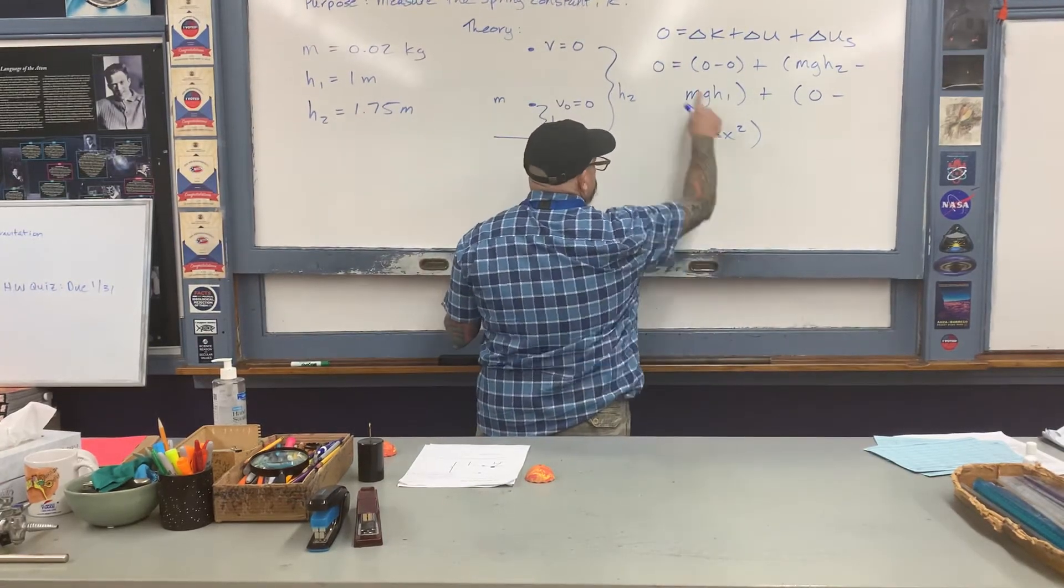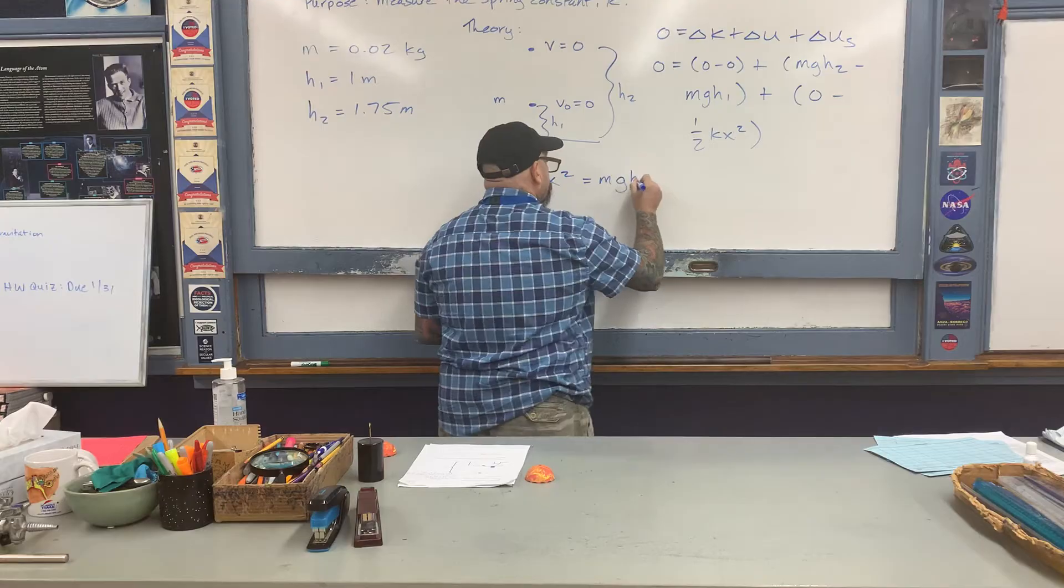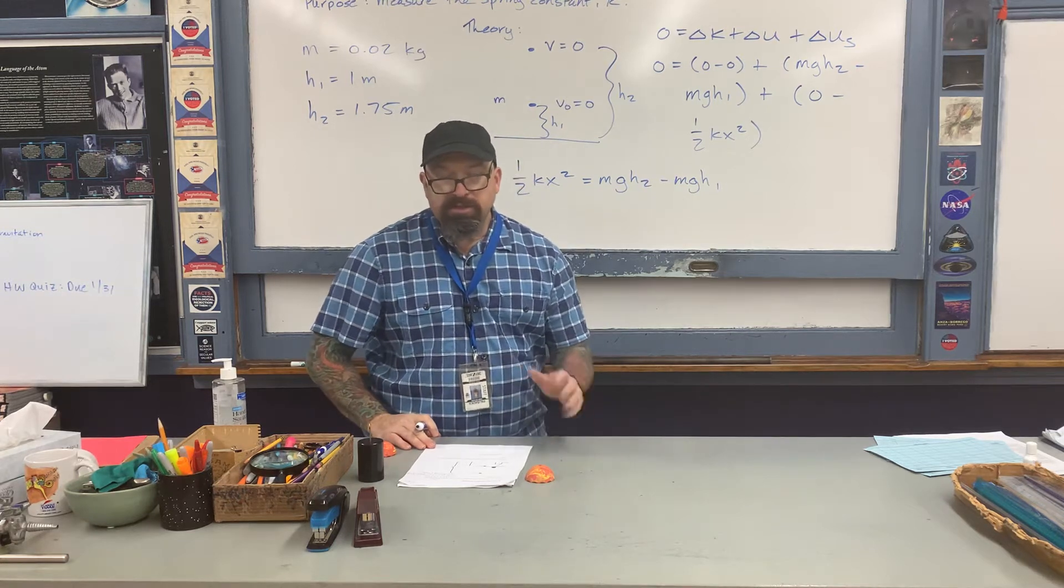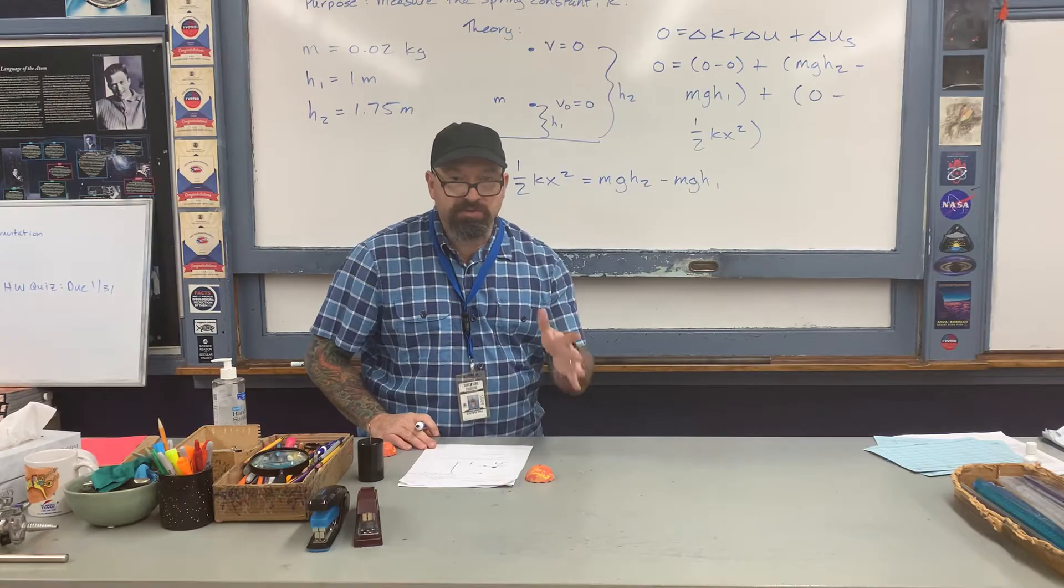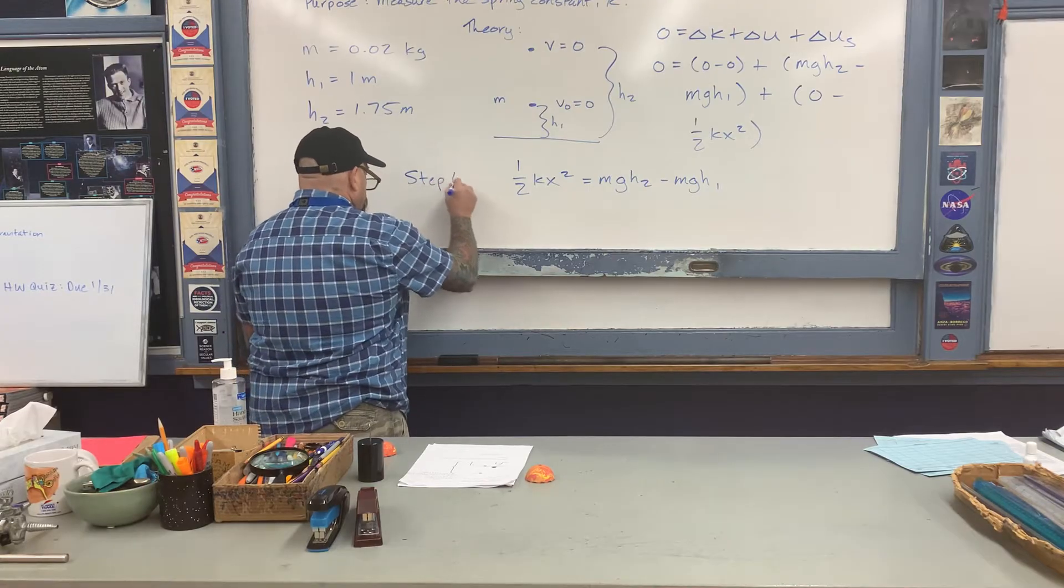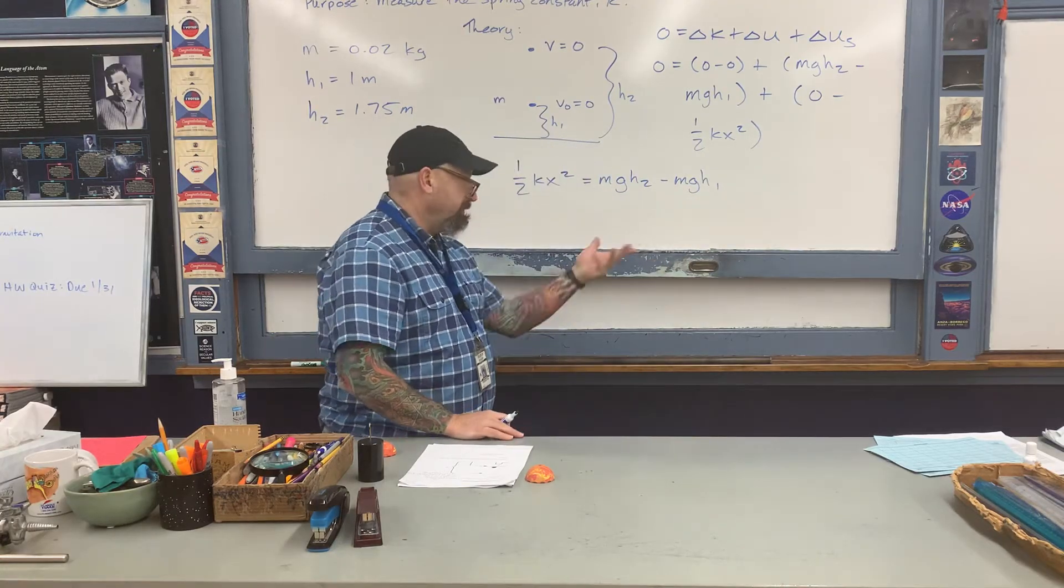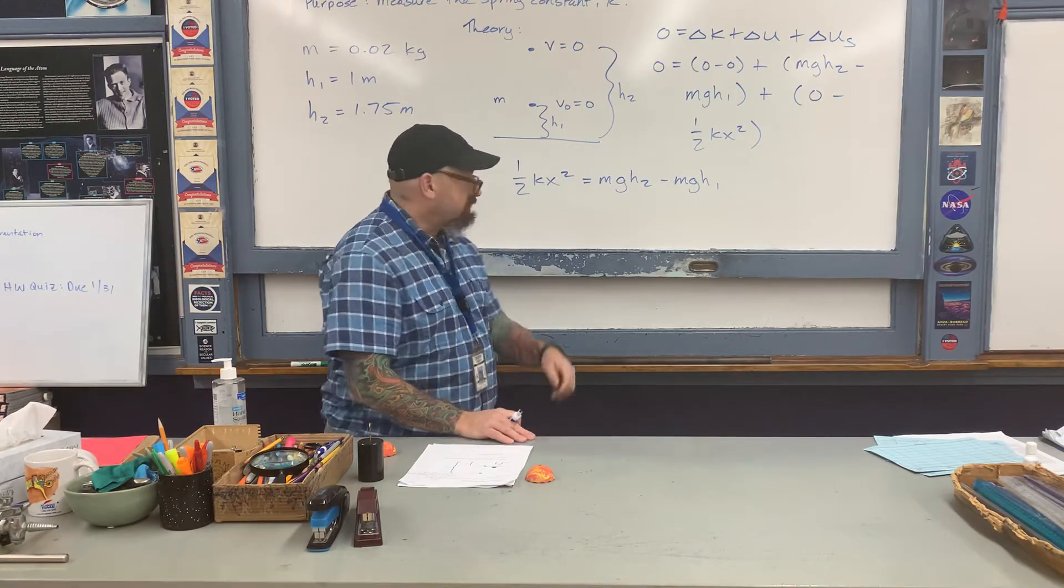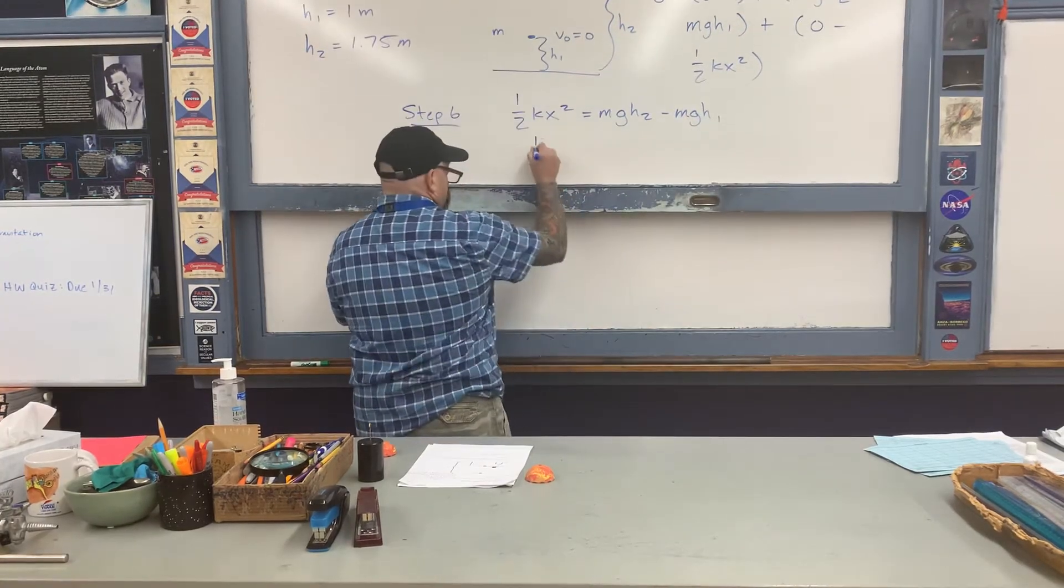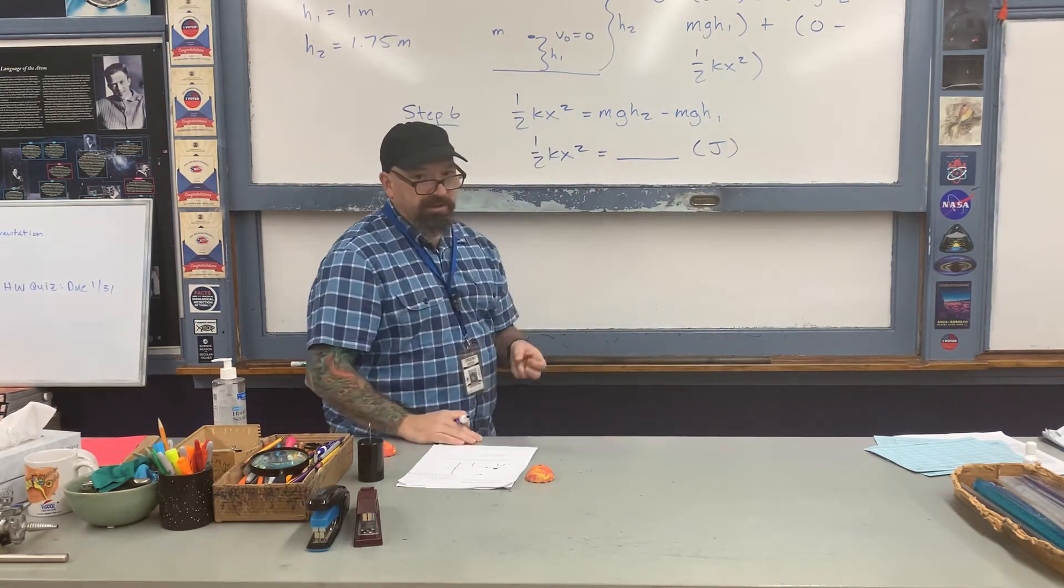Let me take this expression and move it to the other side. I'll throw all the zeros away as I do. My equation then becomes one half kx squared equals mgh2 minus mgh1. Using the data I've obtained thus far, this will allow you to work up to step six in the lab packet. When you get to step six, that's this expression here. You plug in all these numbers you've calculated earlier and the measurements of h1, h2, and mass m, then solve this expression and obtain a number for one half kx squared in terms of joules.